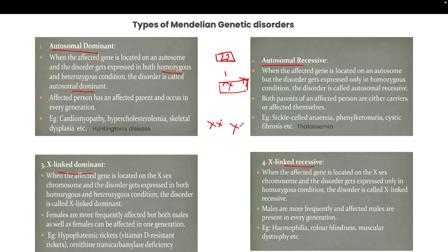For autosomal recessive inheritance, suppose the mother has a recessive gene and the father also has the recessive gene — both parents are either affected or carriers. In that cross, 25% of the offspring will be affected. So to have a recessive disorder in offspring, the parent must either be affected or a carrier.